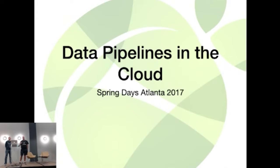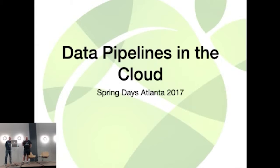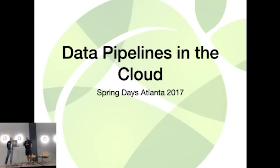What we're going to talk about today is data pipelines in the cloud. We're going to talk about the two types of data pipelines that are typically used — one is event-driven, the other is batch. We're going to talk about the tools you can use to create a batch pipeline — that's what we call Spring Cloud Task. Then we're going to talk about Spring Cloud Stream, which creates event pipelines.